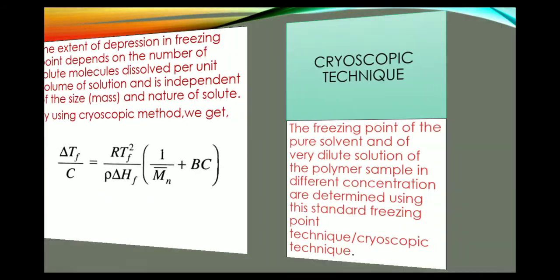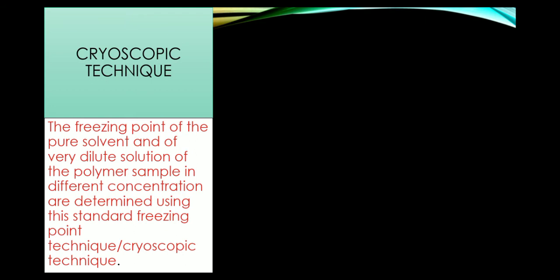Now let us discuss the experimental method. The freezing point of the pure solvent and a dilute solution of the polymer sample at different concentrations can be determined using the standard freezing point technique or cryoscopic technique. In one method, the solvent or solution is carefully supercooled to a temperature about 5 degrees Celsius lower than the freezing point. Then the supercooled liquid is stirred, and it starts freezing rapidly with a rising temperature, attaining a maximum value and then dropping down.